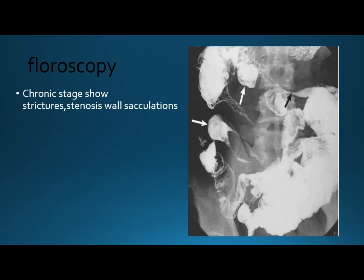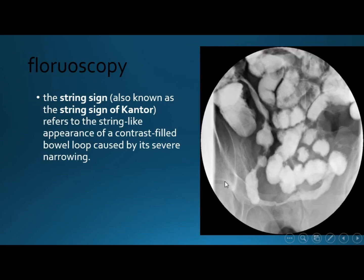This is the fibrotic stage showing stricture with proximal dilation. The string sign is the string-like appearance of contrast-filled bowel caused by severe narrowing — severe narrowing of the small intestine.